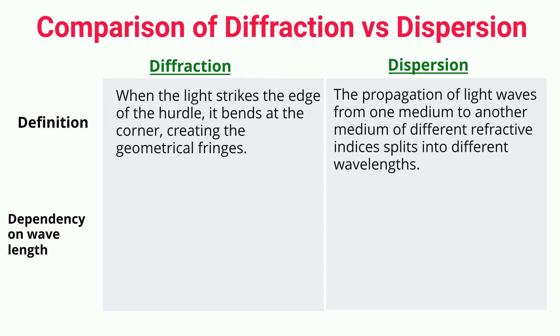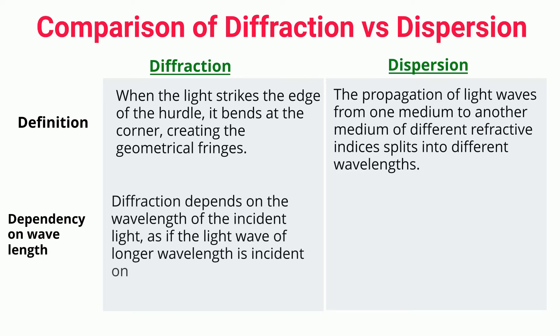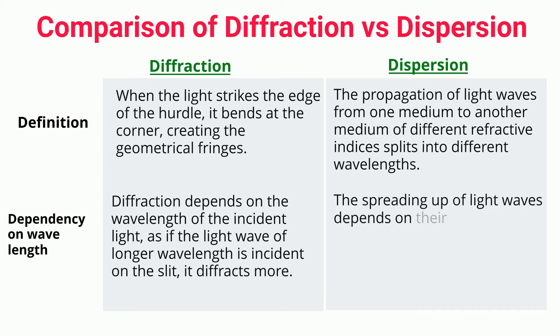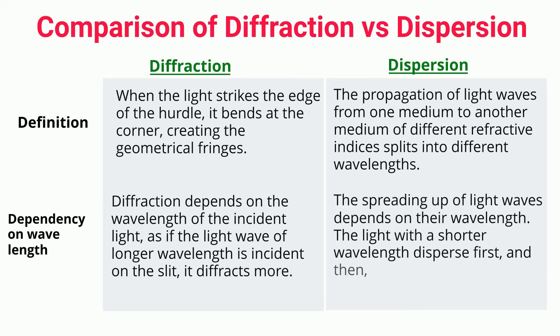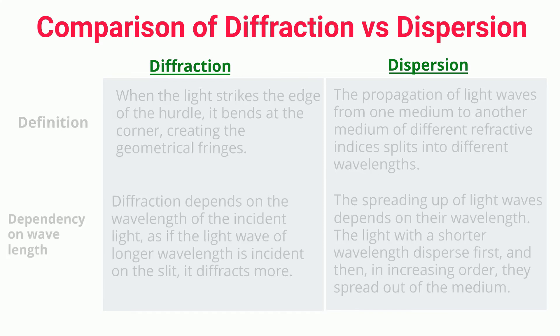Dependency on wavelength: Diffraction depends on the wavelength of the incident light — if the light wave of longer wavelength is incident on the slit, it diffracts more. The spreading of light waves depends on their wavelength. The light with a shorter wavelength disperses first, and then in increasing order, they spread out of the medium.